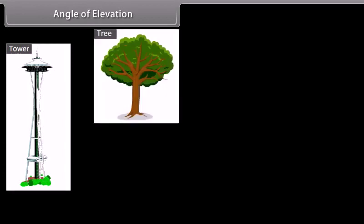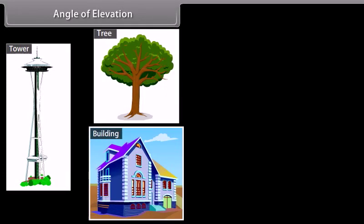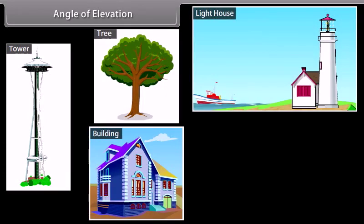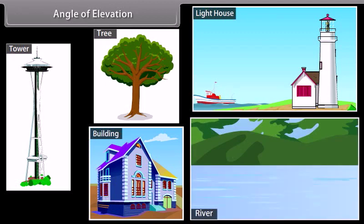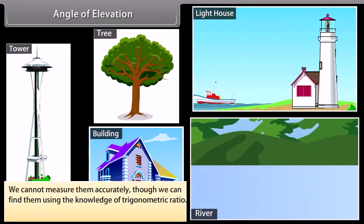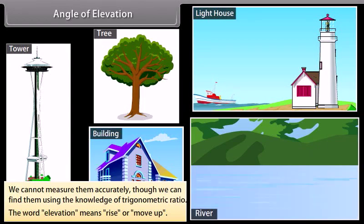Sometimes we are required to find the height of a tower, tree, building, and distances of a ship from lighthouse, width of a river, etc. We cannot measure them accurately, though we can find them using the knowledge of trigonometry ratio. The word elevation means rise or move up.